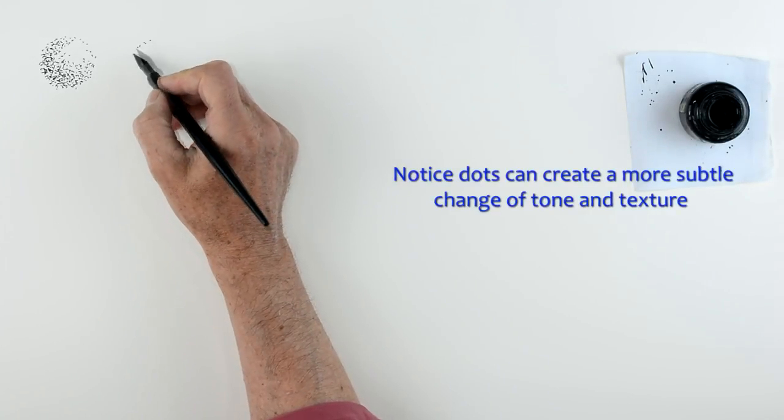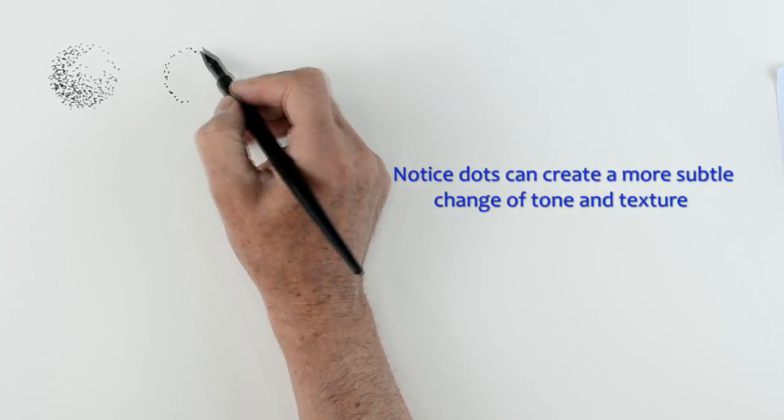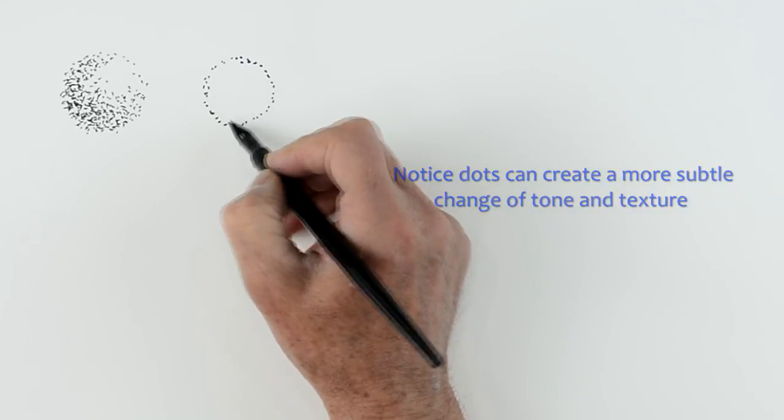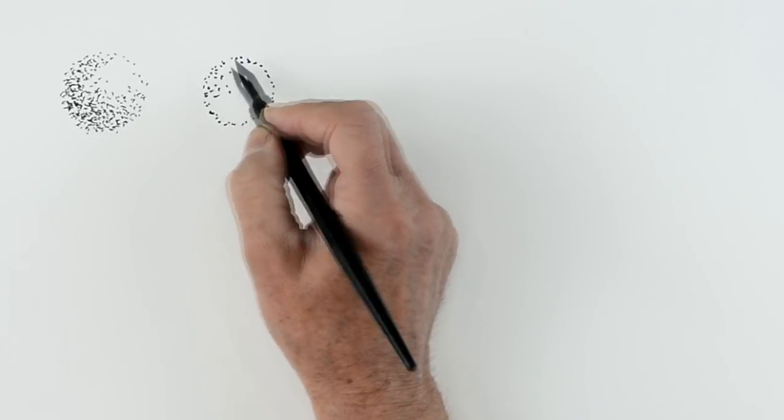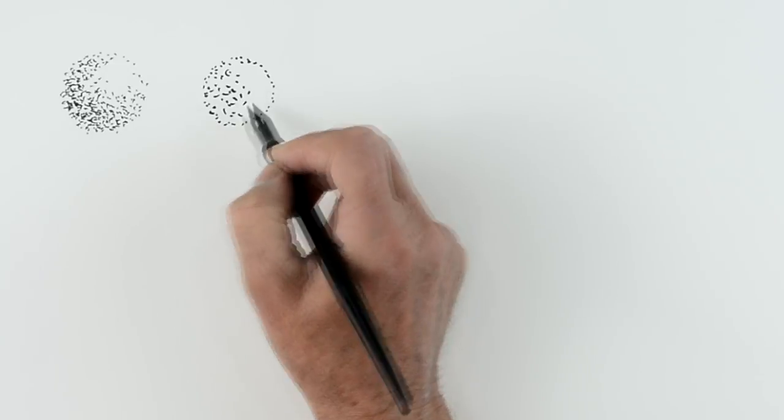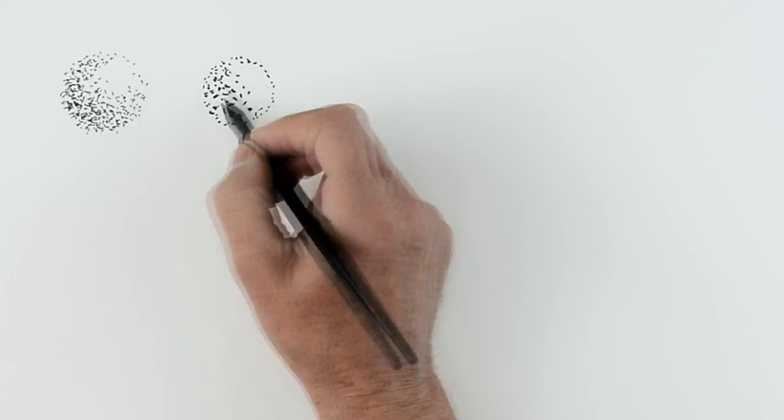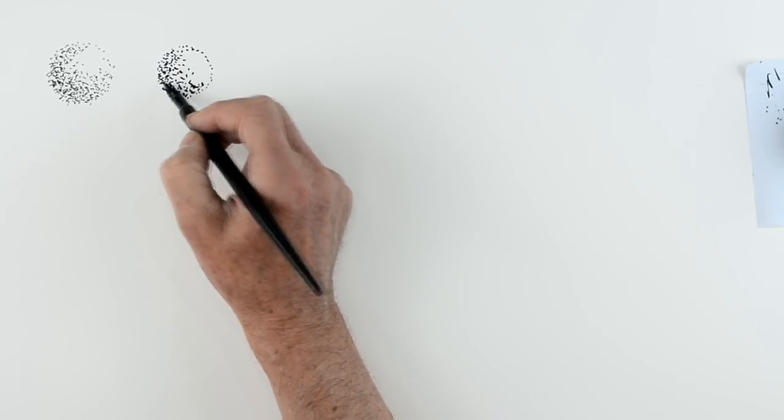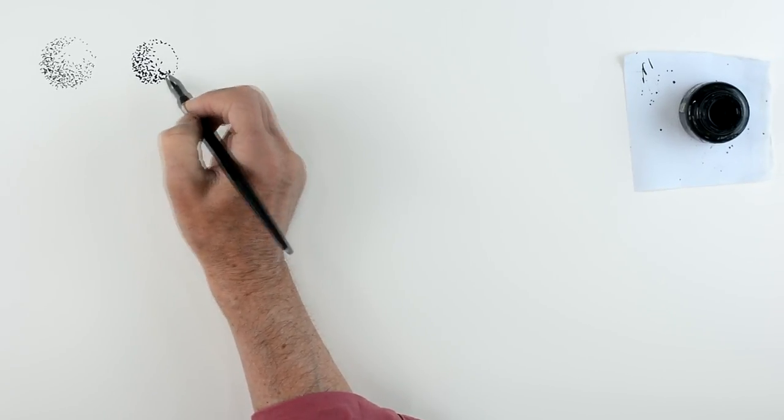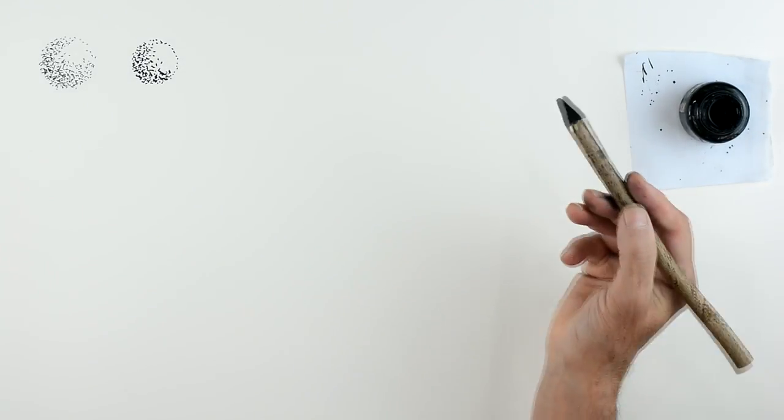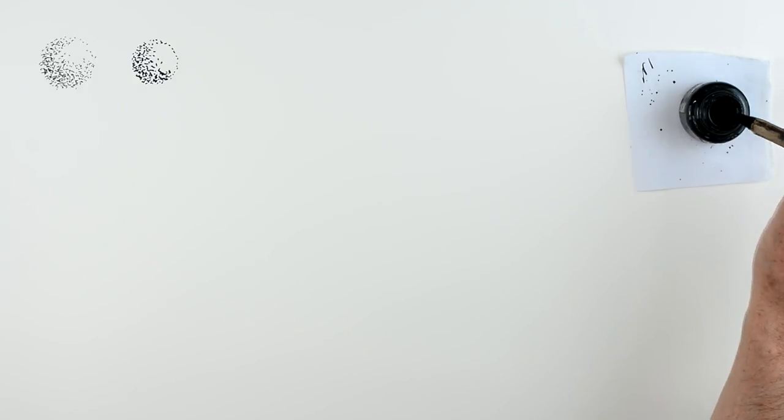The dip pen will produce darker dots and therefore darker tones. It produces slightly bigger dots, slightly cruder dots than the fine pen. But again, it gives you a nice interesting mark. And if you keep building up the dots, you can produce a much darker tone. It makes things look a little bit closer possibly.